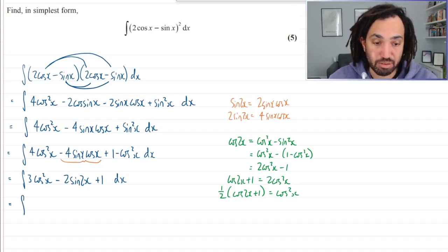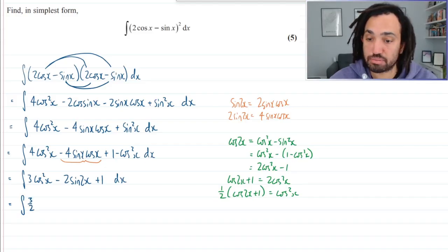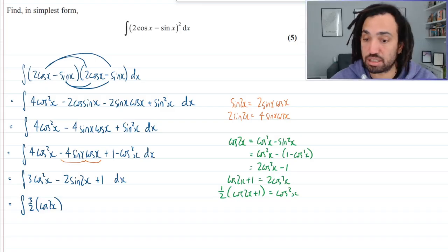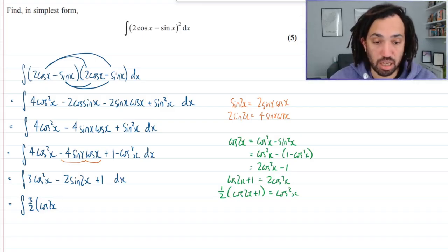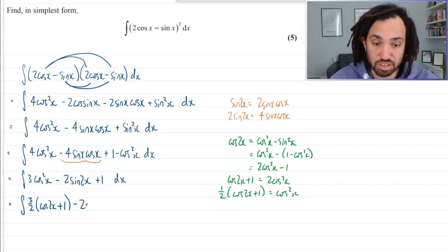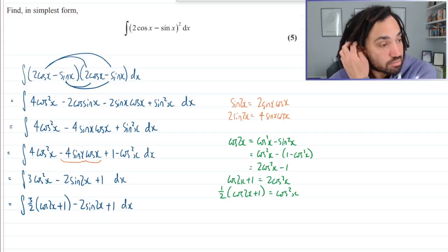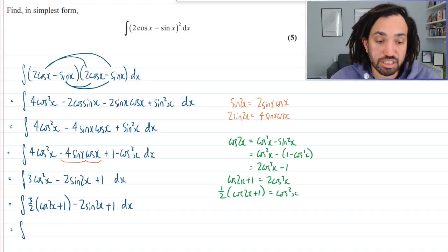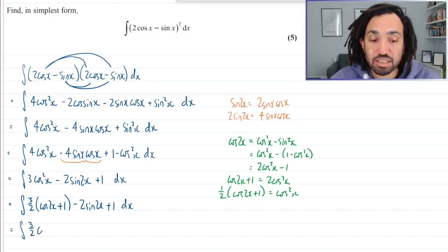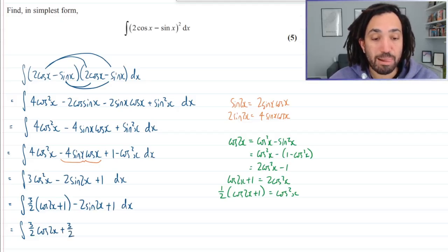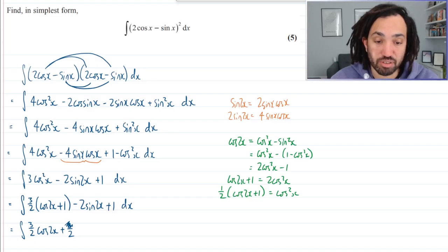And what is that going to give me? Well, if I times this half by the 3, I'm going to get 3 over 2. And this is going to be cos 2x plus 1 minus sin 2x plus 1. Okay, great. And then the final thing to do, I'm just going to expand this bracket in fact, because this is going to give me a plus 3 over 2. And when I add the 1 to it, it becomes 5 over 2.